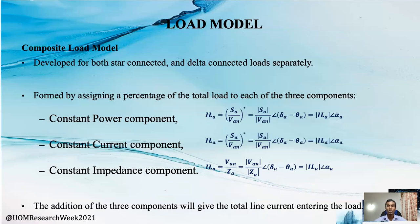For the loads, we used the composite load model because an actual distribution system experiences constant power, constant current, and constant impedance loads at the same time. Load current can be calculated using the equations shown in the slide for constant power, constant current, and constant impedance respectively. Total current drawn by the load can be calculated by assigning a percentage to each of these components.